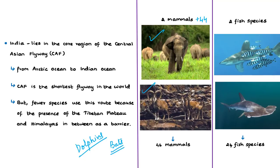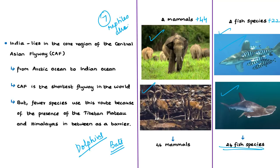For fish species, before COP 13 there were 22 species in the CMS list from India. After the addition of oceanic whitetip shark and smooth hammerhead shark, the total migratory fish species from India is now 24. There was no new addition of reptiles during COP 13; already from India there are 7 reptiles listed in CMS — 5 species of turtles, the Indian gharial, and the saltwater crocodile.